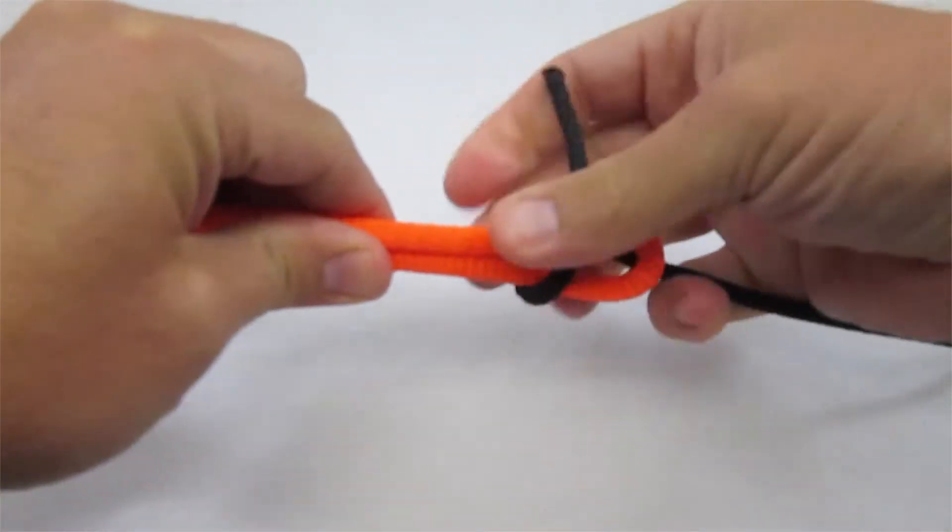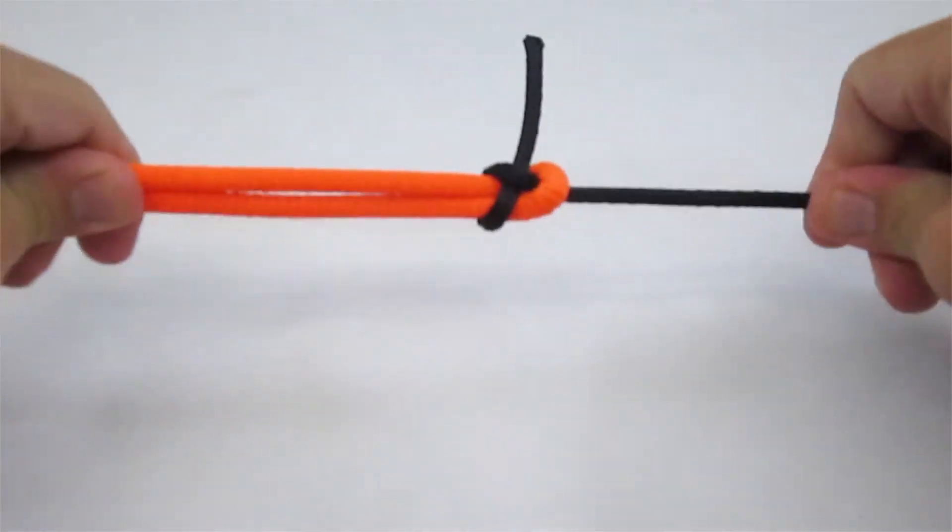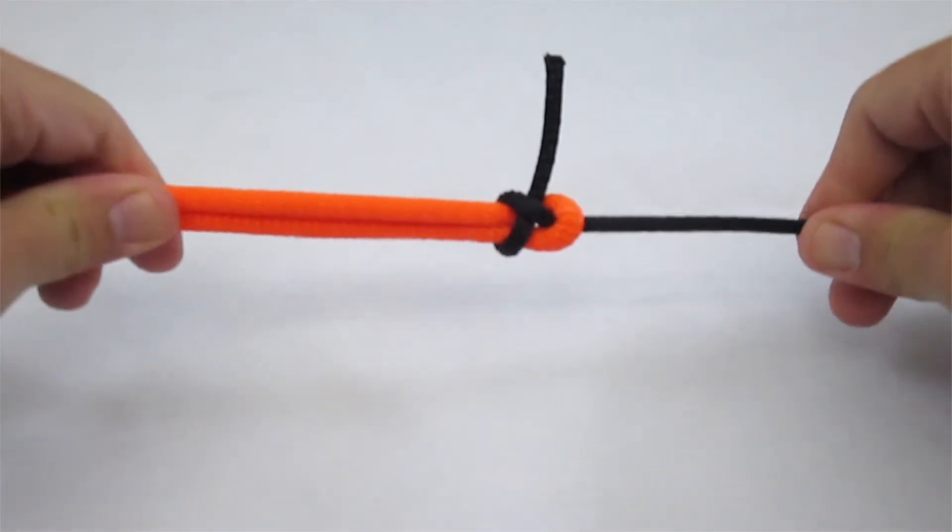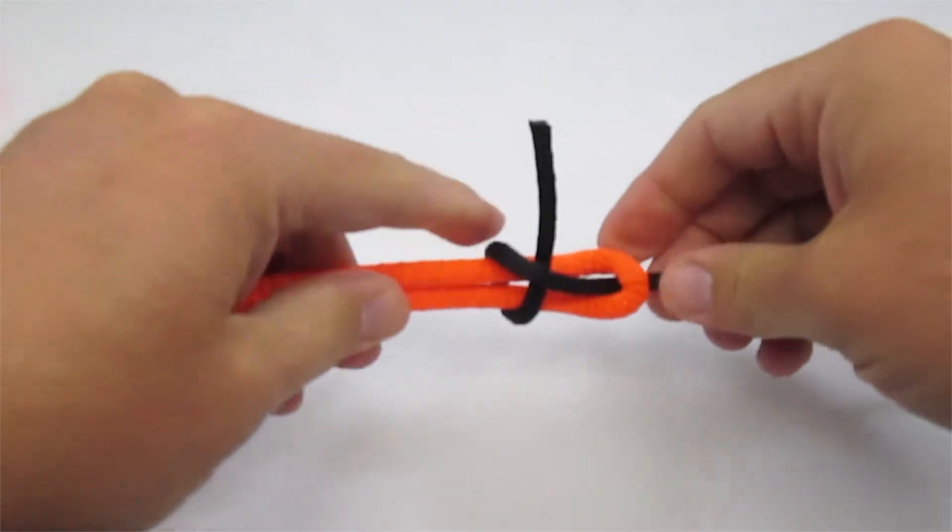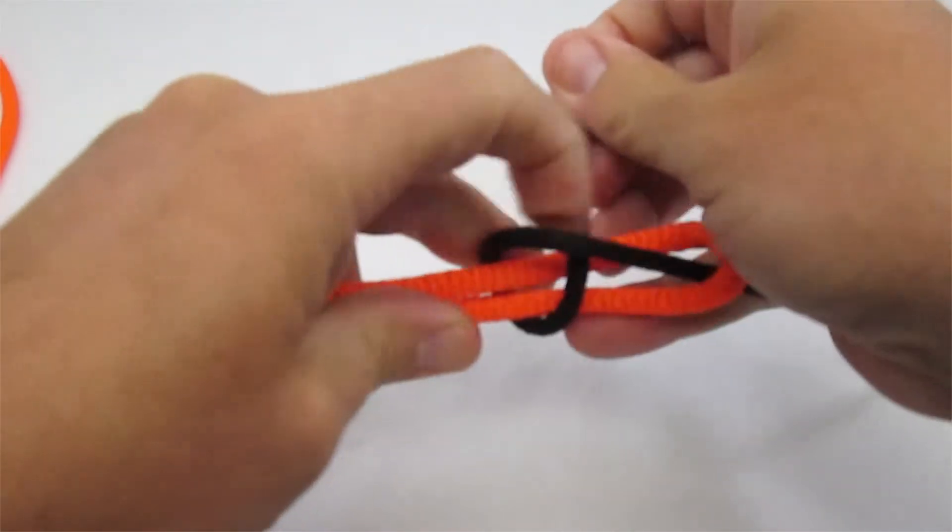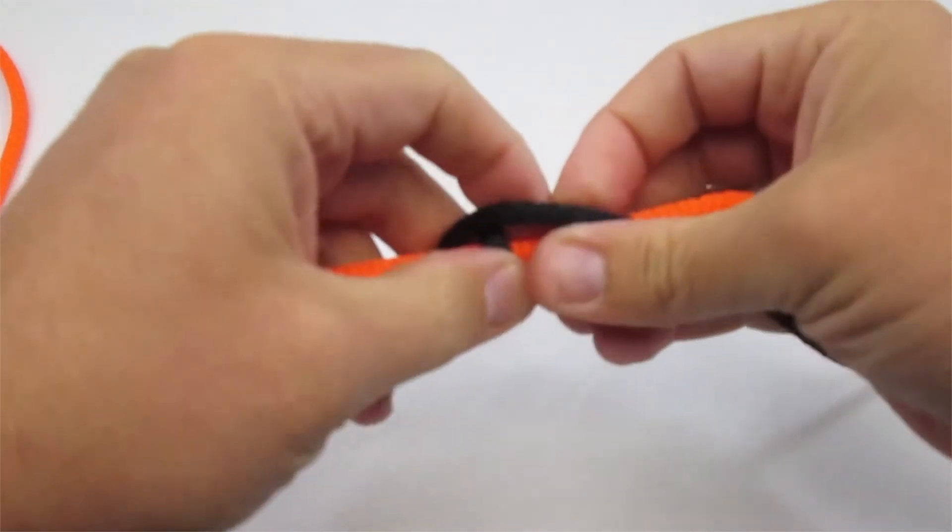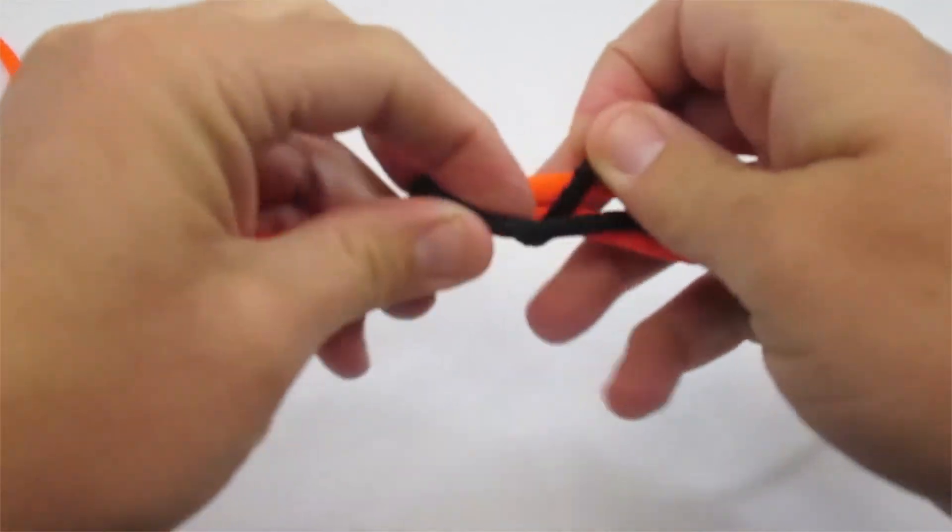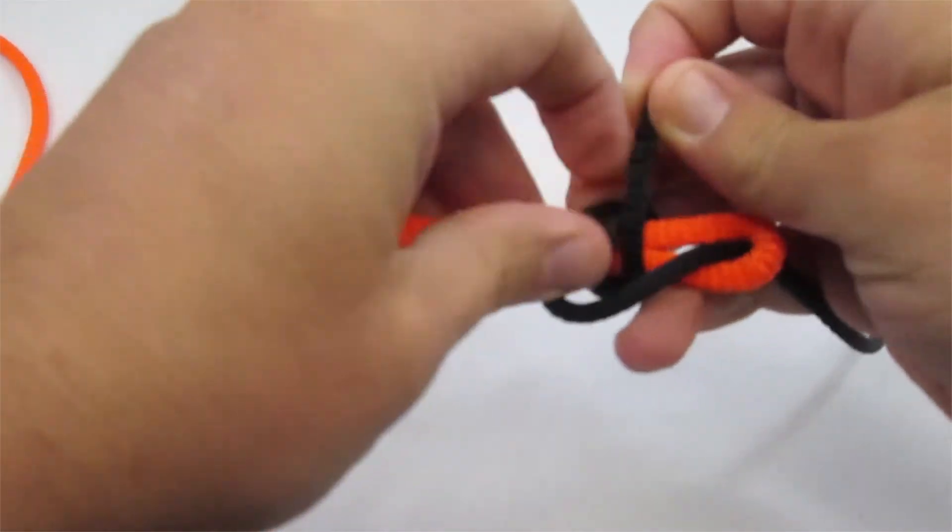You'll pull that tight. As you can see that holds. There is a more secure version where you will just take that end loop, pass it around one more time, back through itself, and then you'll just cinch that all together here.